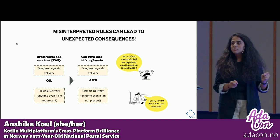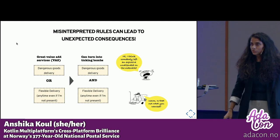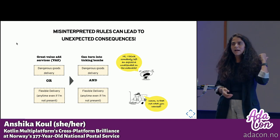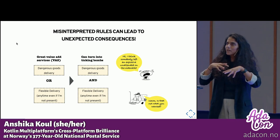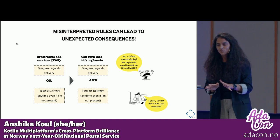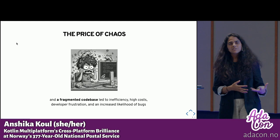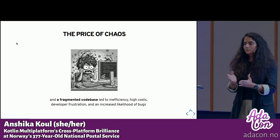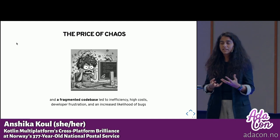There were also business consequences of not having a handle on our rules. For example, we deliver dangerous goods and we also have something called flexible delivery — basically, 'I'm not home, put it on my sidewalk, throw it in the backyard.' These two services don't go hand in hand. But if this is misinterpreted or not implemented correctly, you will end up with explosives on your sidewalk — not that we deliver explosives, as far as I know. Apart from business consequences, there was also discontentment amongst team members: developer frustration, increased likelihood of bugs, and high cost of developing any new feature in this codebase.